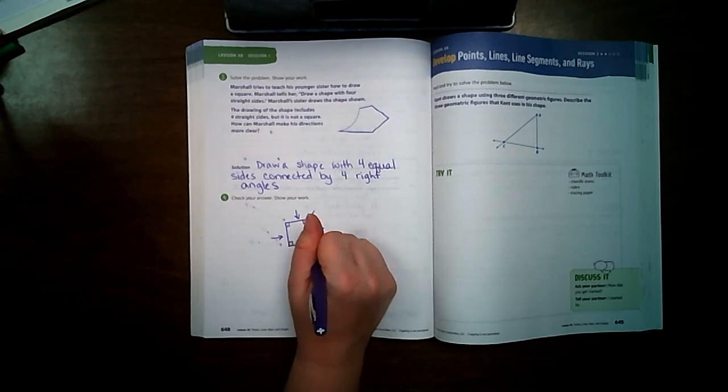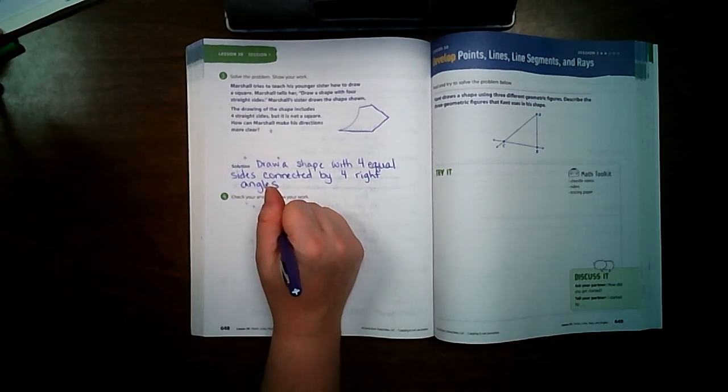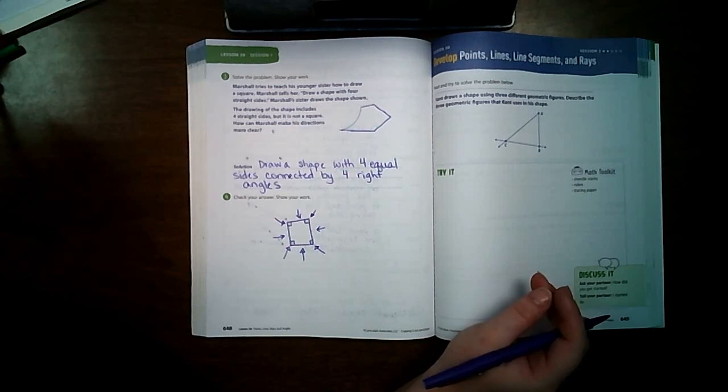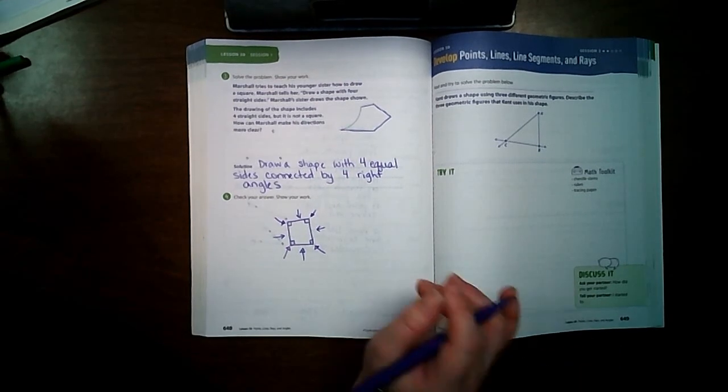Connected by four right angles: one, two, three, four. And there's our shape. That's it for session one. I will see you back for session two.